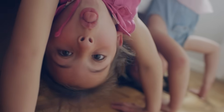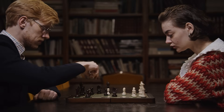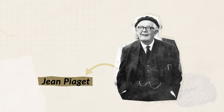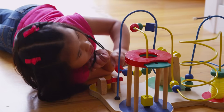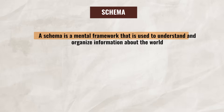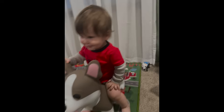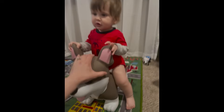When talking about cognitive development, we are talking about how an individual's skills and thinking changes over time. One psychologist we need to talk about is Jean Piaget, who studied how children learn and think about the world. Piaget believed that children developed schemas — a schema is a mental framework used to understand and organize information about the world. For example, my one-year-old son has a schema for dogs.